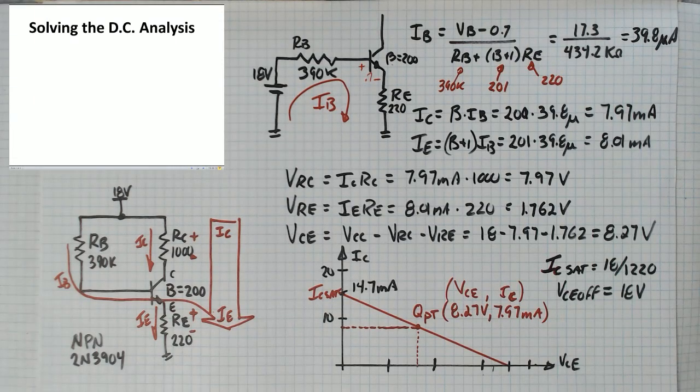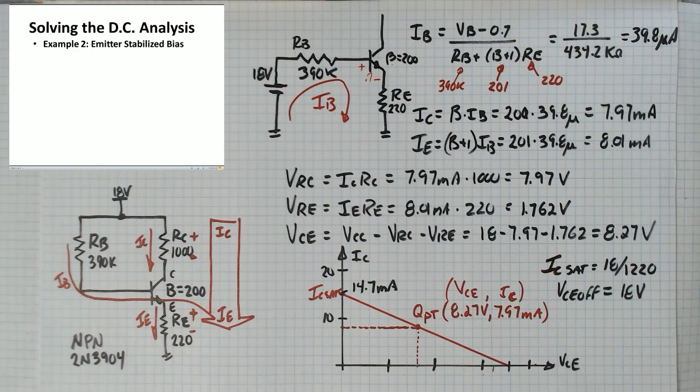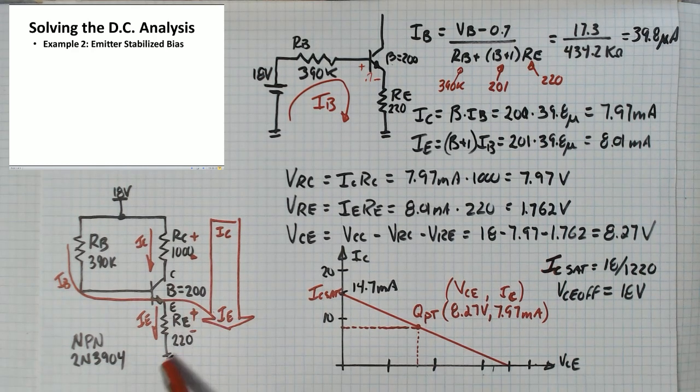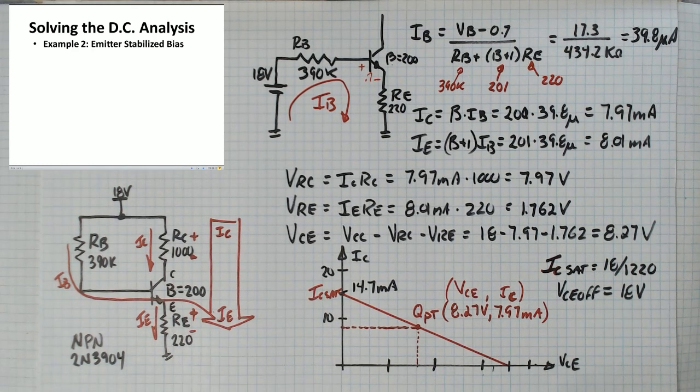Solving the DC analysis, this time with an emitter stabilized circuit. In the emitter stabilized bias circuit there's an extra resistor down here on the emitter and that helps to stabilize the bias point if you have transistors with different betas.